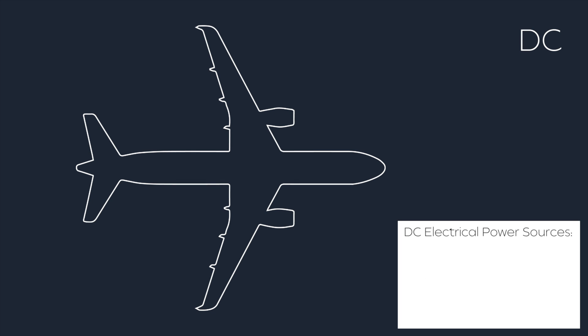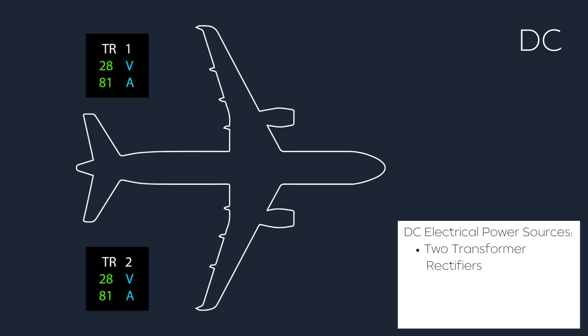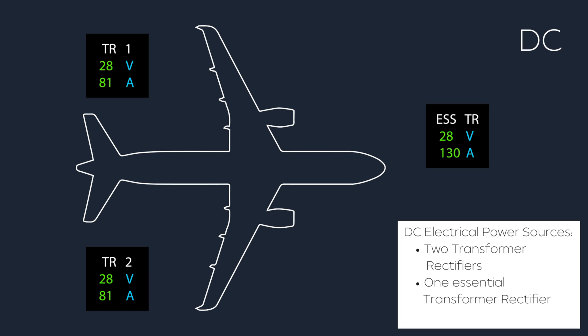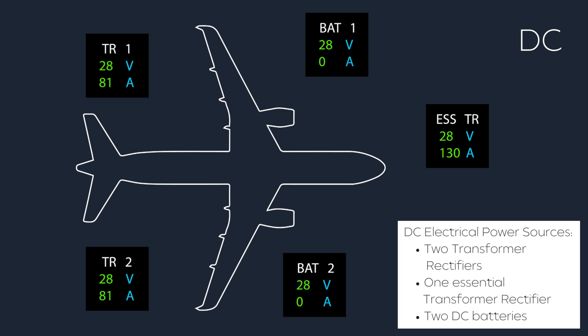The aircraft DC electrical power is supplied through two main transformer rectifiers, which convert AC power to 28 volts DC power. The DC system has a backup essential transformer rectifier, which will power the essential DC system from the emergency generator, in the event of failure of the three main generators, or if TR1 and TR2 are faulty. As a backup, two batteries can power some of the DC circuits, if all other power sources are inoperative.